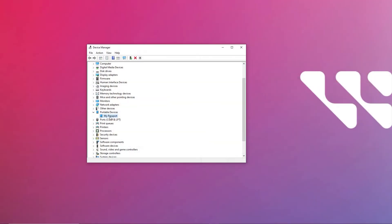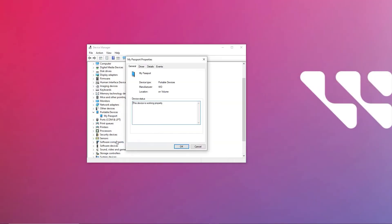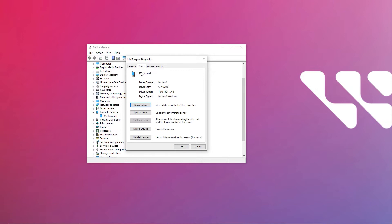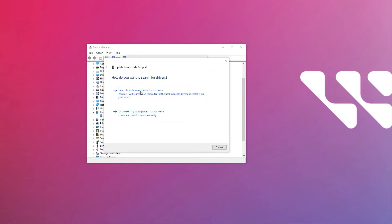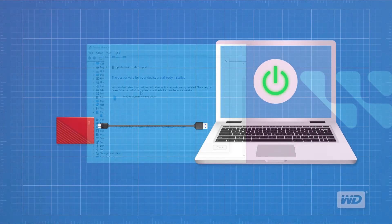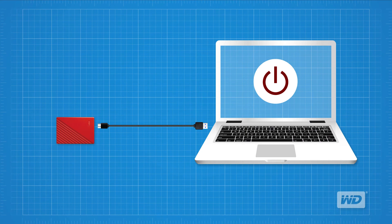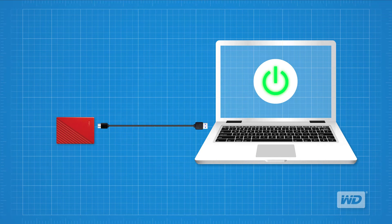Right-click the unknown device, click Properties, and select the Driver tab, then click Update Driver. Finally, restart your computer. When the restart process is complete, log into your desktop and try connecting your portable storage device. If Windows still does not detect your drive, we will proceed to the next test.